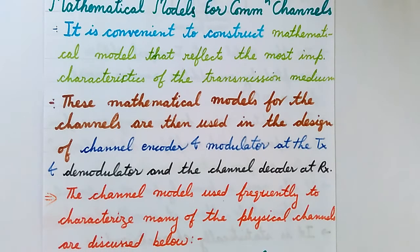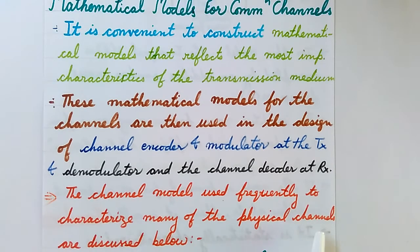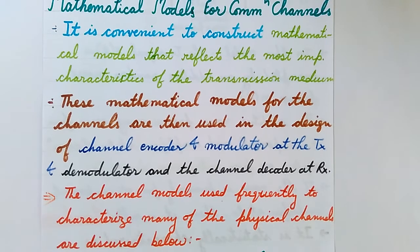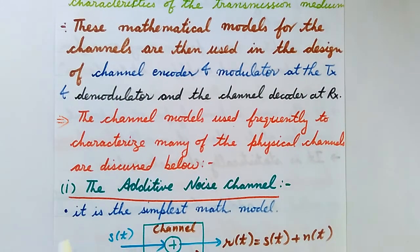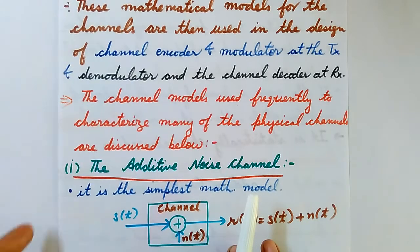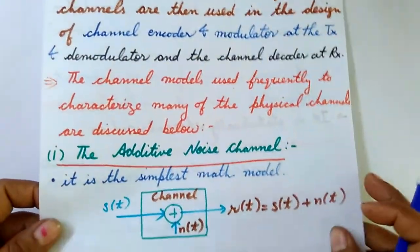The channel models which are frequently used to characterize many of the physical channels available are mainly of three types. The first one is the additive noise channel, which is the most commonly used and the simplest of all three mathematical models.